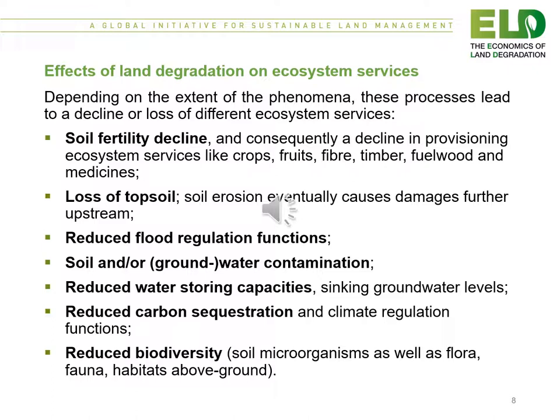For example, soil fertility decline leads to a decline in provisioning ecosystem services like crops, fruits, fibre, timber, fuel, wood and medicines. The loss of topsoil through soil erosion eventually causes damages further upstream. This includes reduced flood regulation functions, soil and groundwater contamination, reduced water storing capacities, sinking groundwater levels, and reduced carbon sequestration and climate regulation functions. This goes along with reduced biodiversity that includes soil microorganisms as well as flora, fauna and above ground habitats.